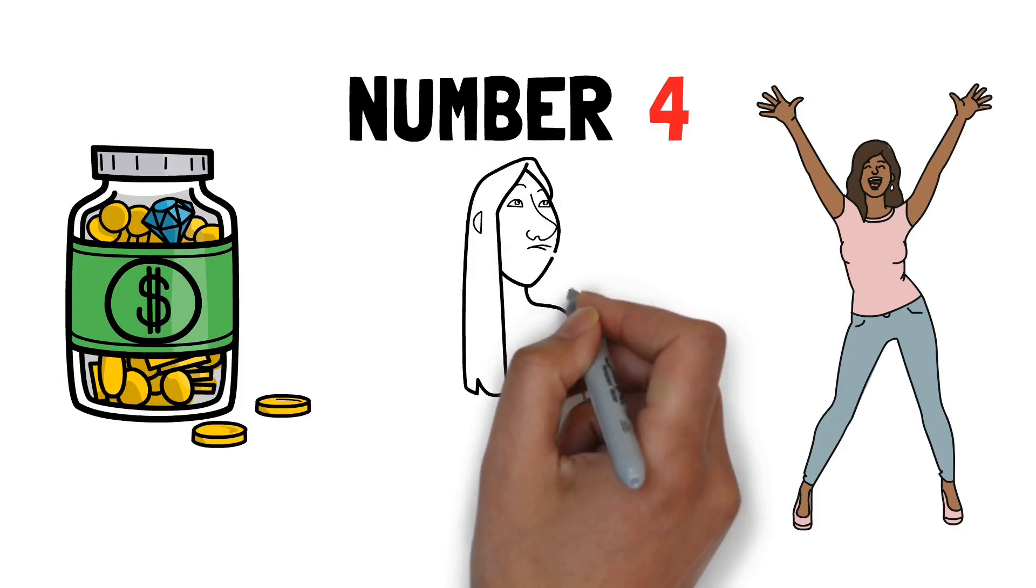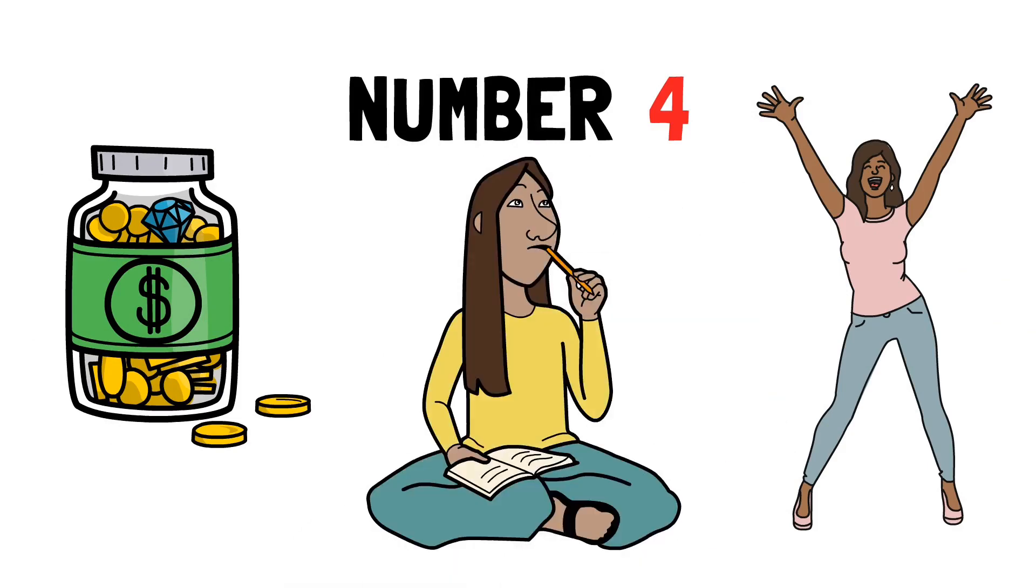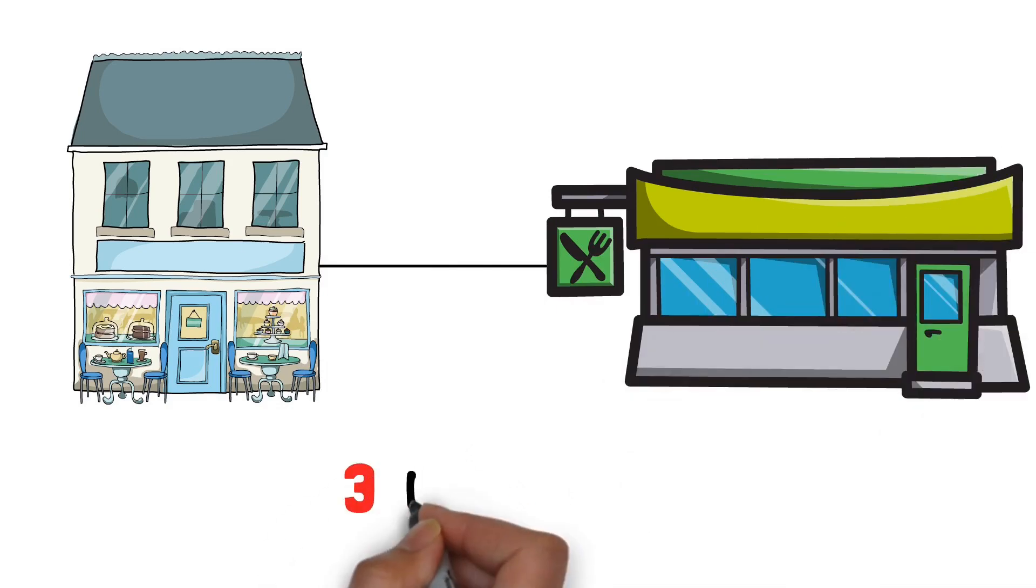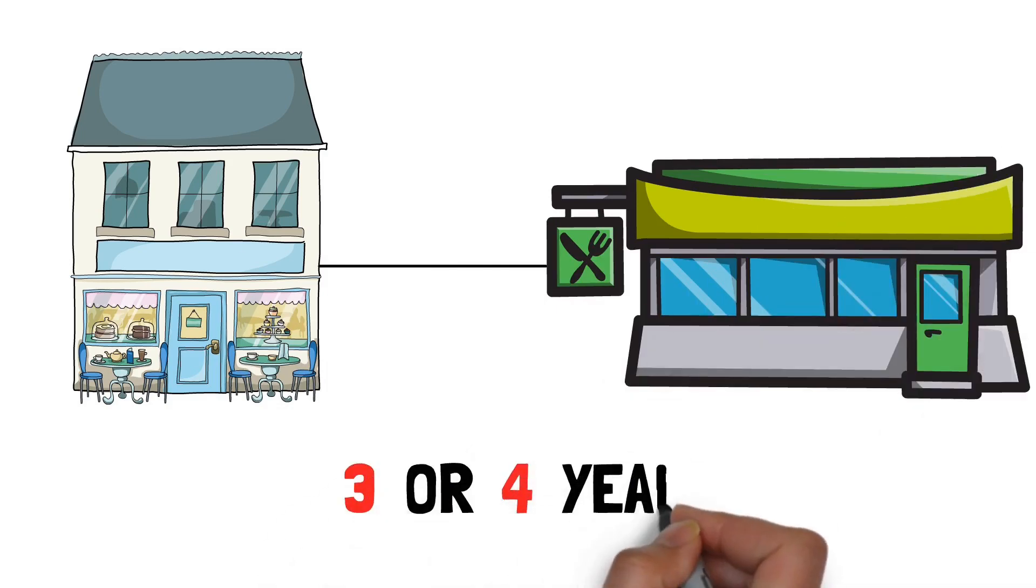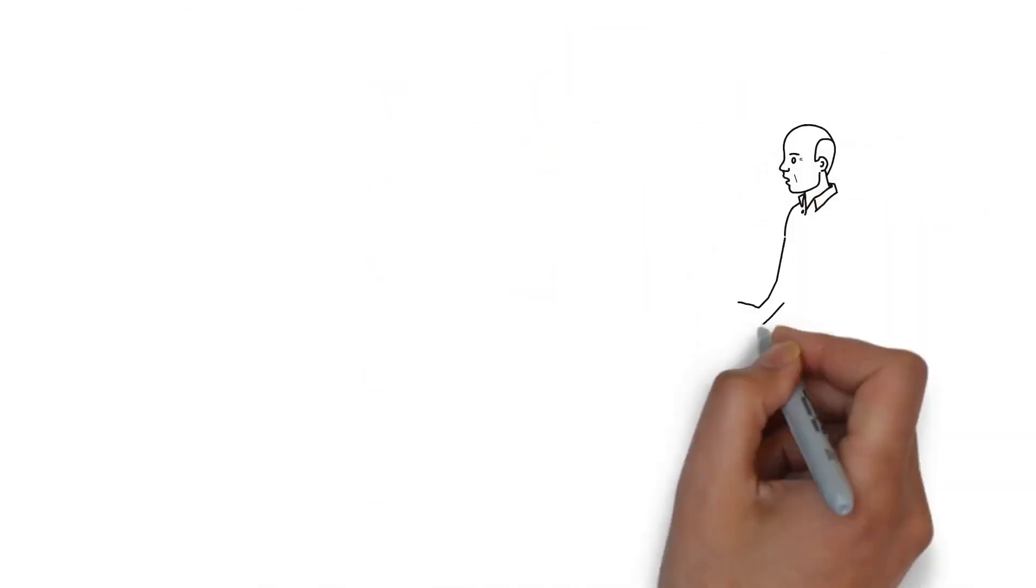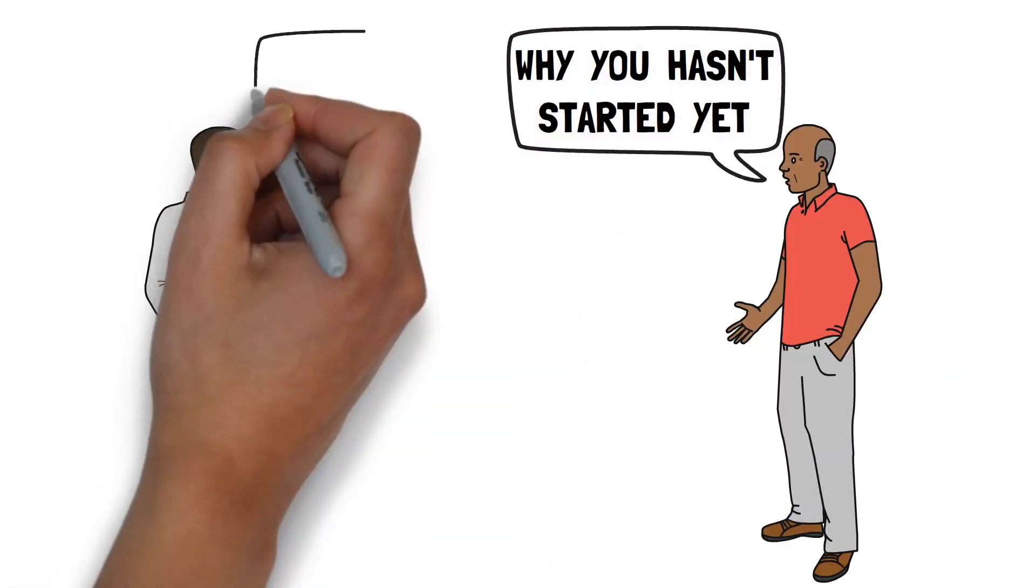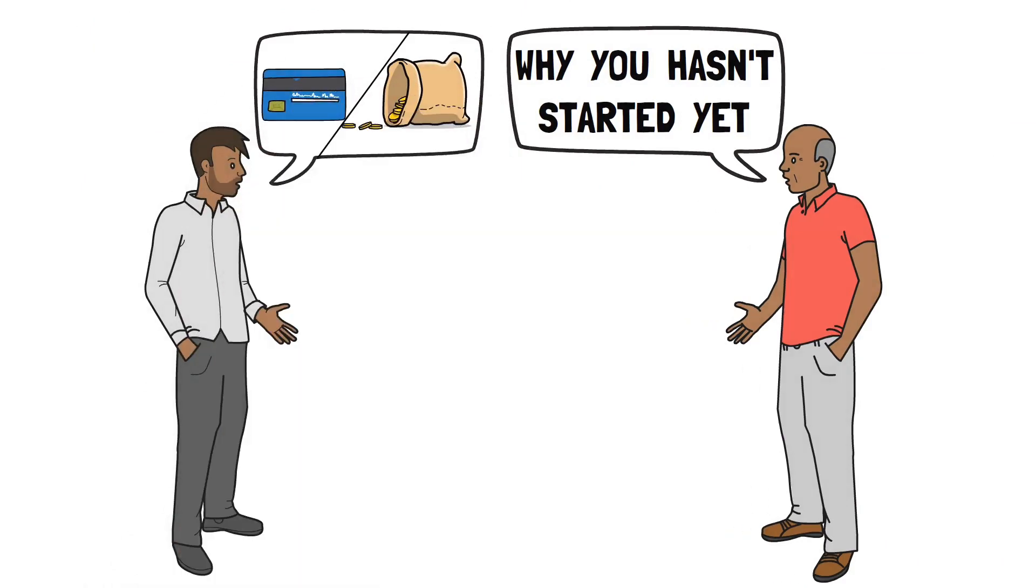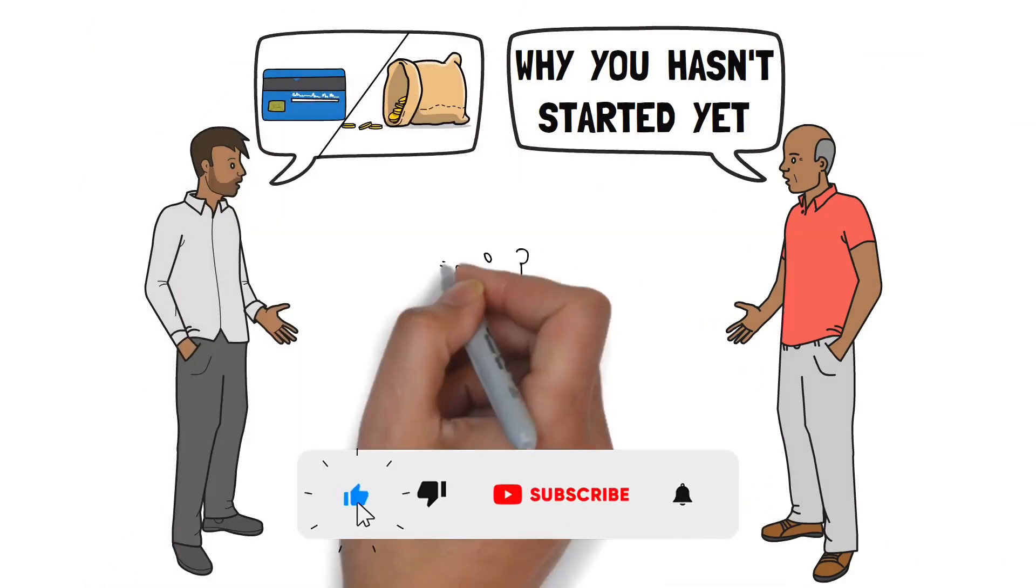Number 4. Poor people focus on obstacles. One of my friends wants to start a chain of restaurants. In fact, he has been telling me that for the last three or four years, but every time I ask him why he hasn't started yet, his typical response is, I don't have the money and I don't want to get into debt. And that's the problem.